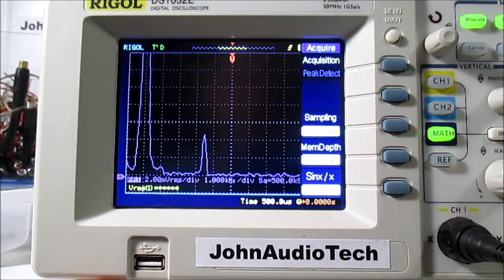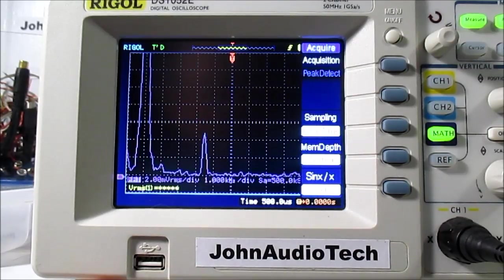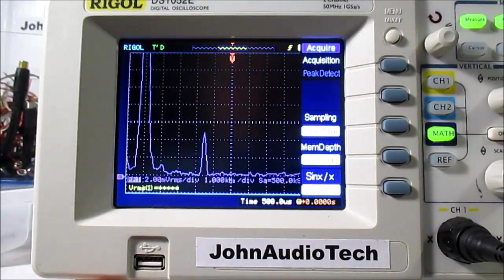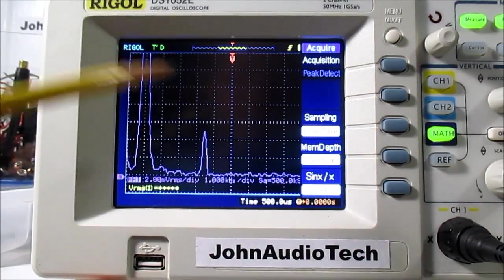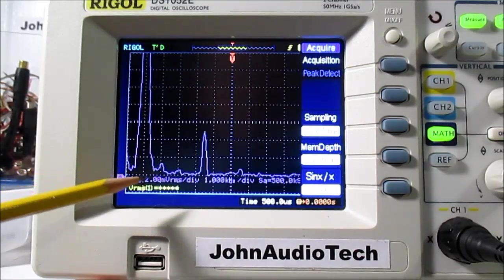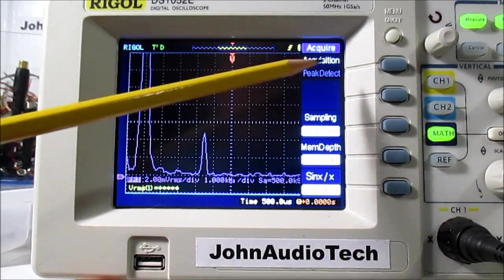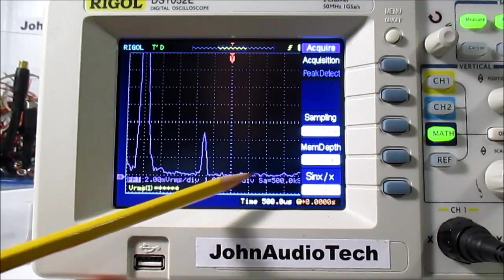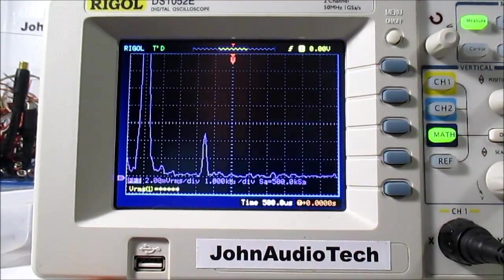There's articles online. I think Agilent has some articles, Keysight or whatever they call themselves now, about setting up your spectrum analyzer mode. And that's where I got that information from. So when I use Peak Detect, I get a better waveform. That's pretty much it.